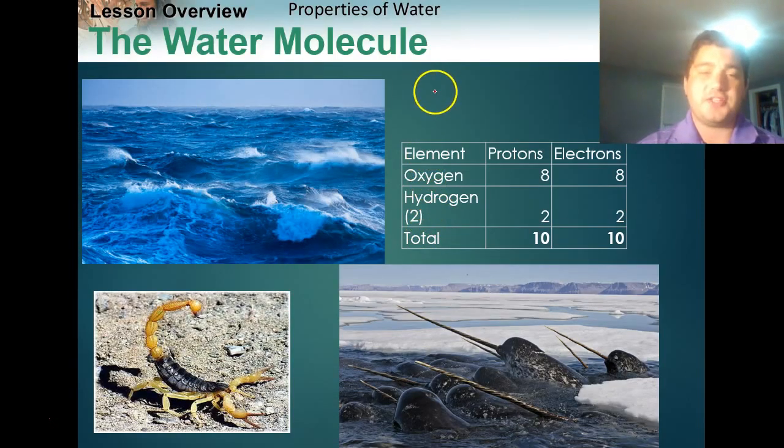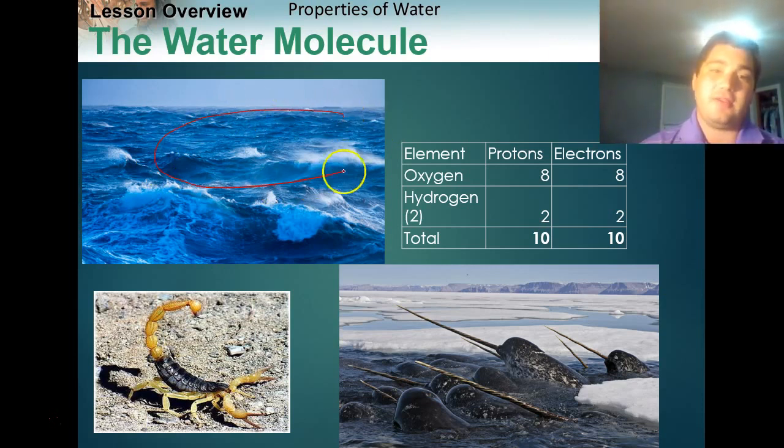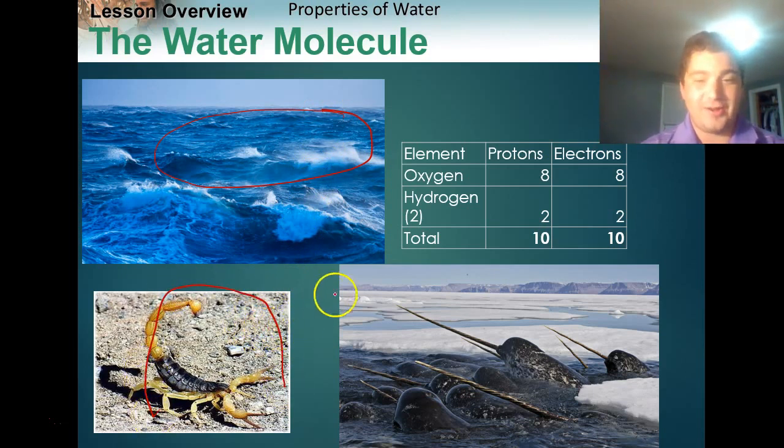So first off, section two is all about water, and the water molecule is really just a great molecule. Without it we would not be here, life wouldn't exist on Earth. It's the only thing that surrounds about 70% of the Earth in liquid form, so not much else occurs that naturally in liquid form, like we have here the oceans. Like we said, everything on Earth depends on it. Even these guys, these little scorpions that live in the deserts, they need water.